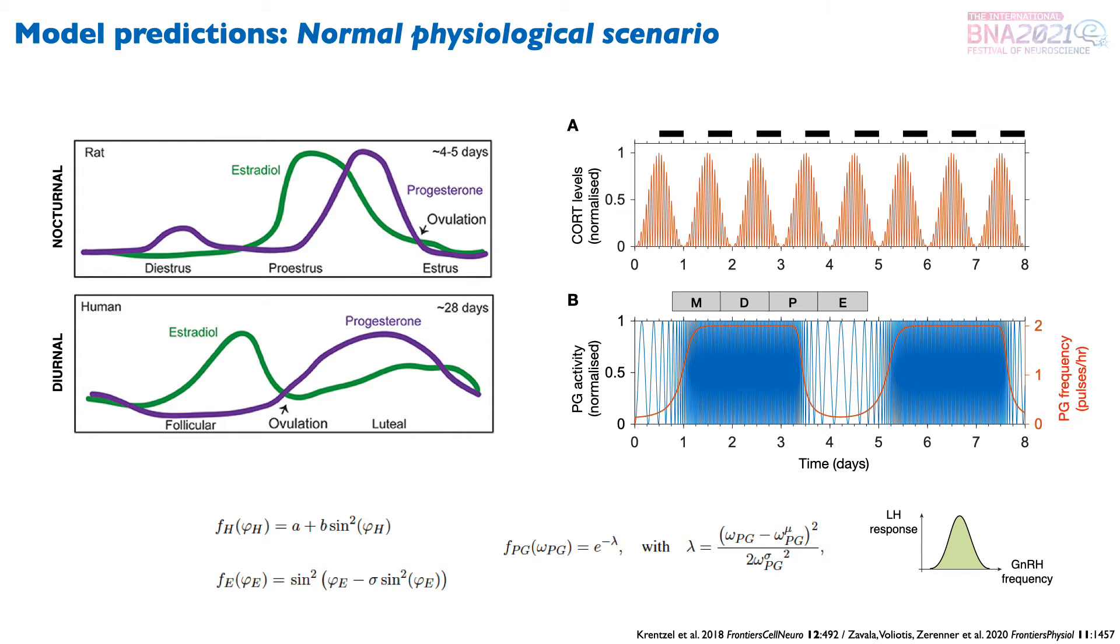Note that the pulse generator activity here, which is shown in blue, is normalized because we are only interested in its frequency. These mathematical functions here were just used to represent our assumptions of a circadian hypothalamic drive, an asymmetric estradiol phase, and a bell-shaped response of LH to the pulse generator frequency.